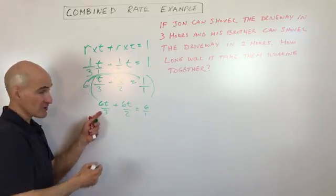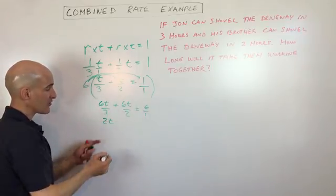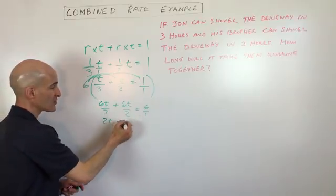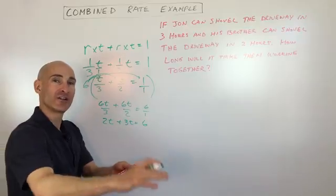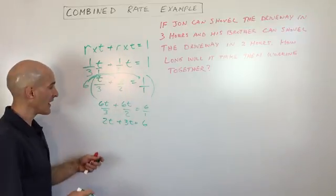But you can see this 6 divided by 3, that's reducing or canceling down to 2t. This is reducing or canceling down to 3t, and this is just 6. So that's why they call it clearing the denominators. You're eliminating the denominators.